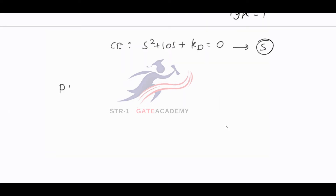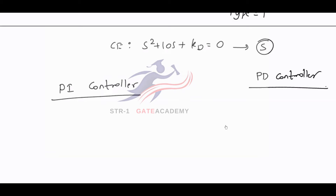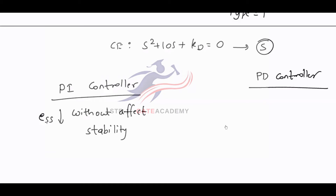Next, we will introduce the PI controller. For PI and PD controllers, we need not study too much because we have already seen the controllers separately. With the integral controller, the steady state error was reducing but the system was becoming unstable. PI controller will decrease ESS because we are introducing an integral controller without affecting stability. This is the advantage — without affecting stability, it reduces the ESS.